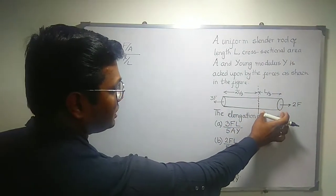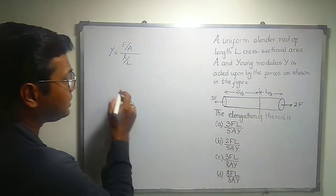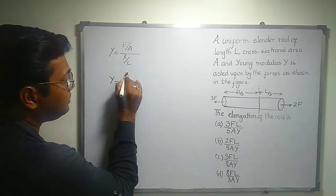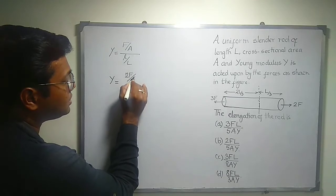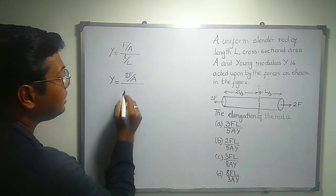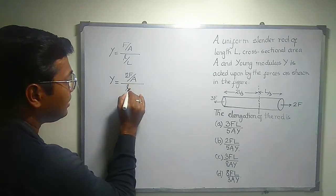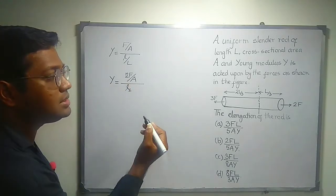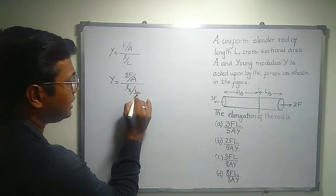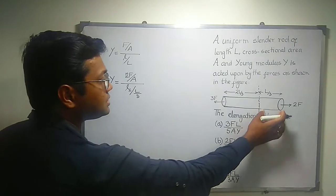Now for this section, if I want to find it out, then the Young modulus is same. The force applied on this section is 2F. The cross sectional area of this section is capital A. And let us say the increase in length for this section is L1, and the total length is L by 3 for this section.